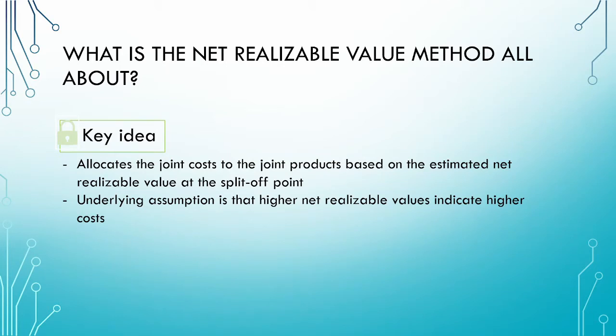So what is the net realizable value method all about? The key idea is that the joint costs are allocated to the joint products based on the net realizable value at the split-off point. This is very similar to the sales value at split-off point method from our previous video. However, instead of directly using the sales value at the split-off point, we work backwards from the final selling price by subtracting the further processing costs to arrive at the net realizable value at the split-off point.